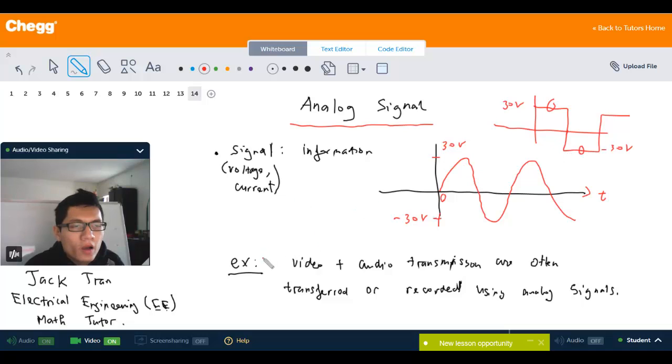So, an example of the analog signal would be some video and audio transmission or recording data using the analog signal. And the analog signal is really sensitive to the surrounding, as I mentioned in the other video.